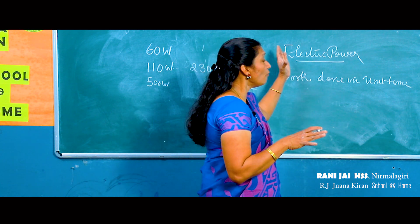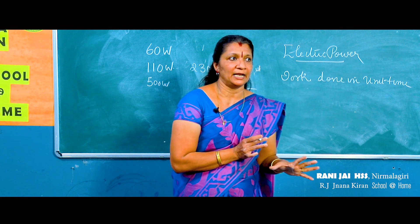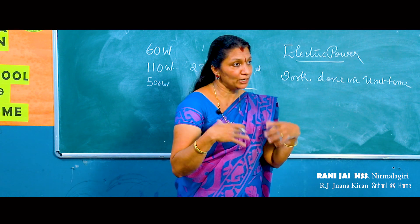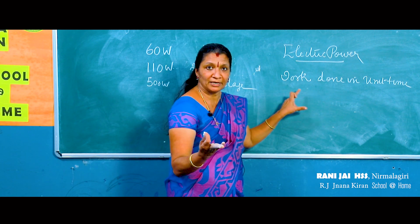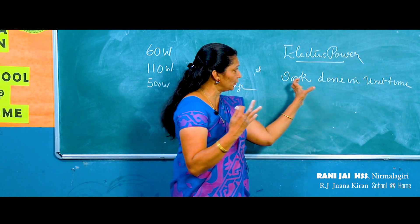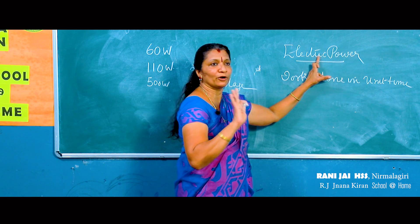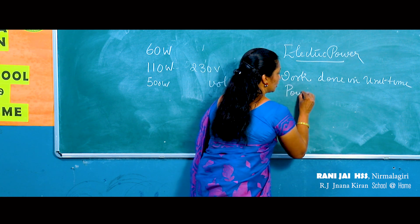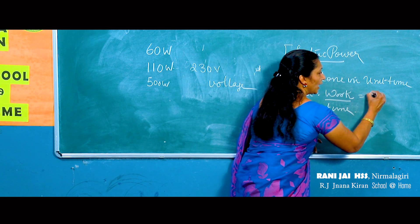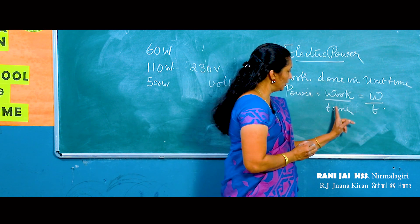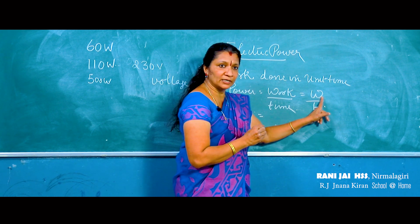Now what we are going to study is how we can calculate electric power in all these electrical appliances — how much work will be done and how will you calculate it. The definition: power is work done in unit time. We have studied this in 9th standard — power P is equal to work W divided by time T.